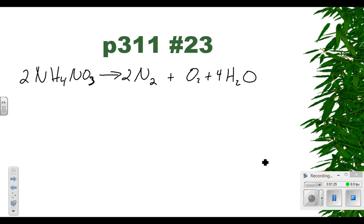So we have 4 nitrogens on each side, 8 hydrogens on each side, 2 times 3 is 6 oxygens, we have 4 oxygens and 2 oxygens. Looks like we're good to go there and I've already forgotten what the given was.